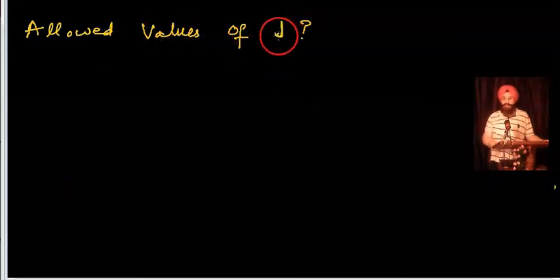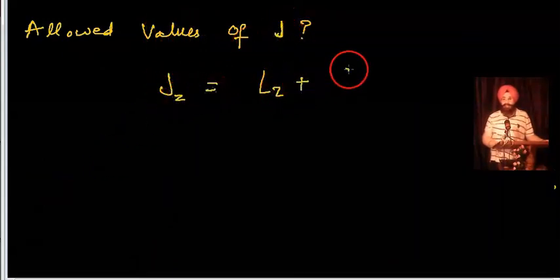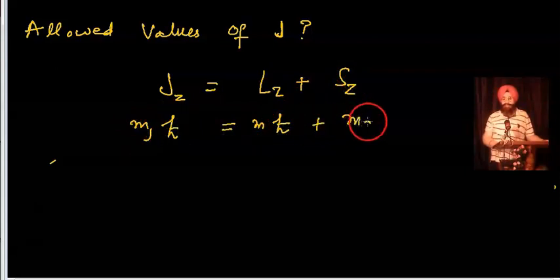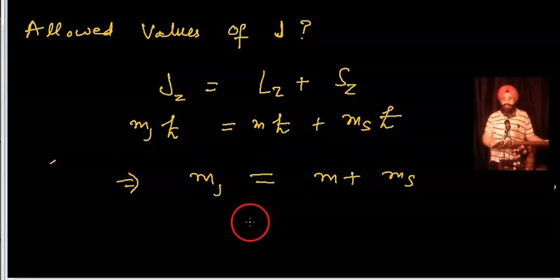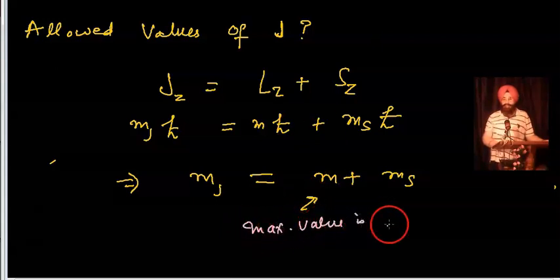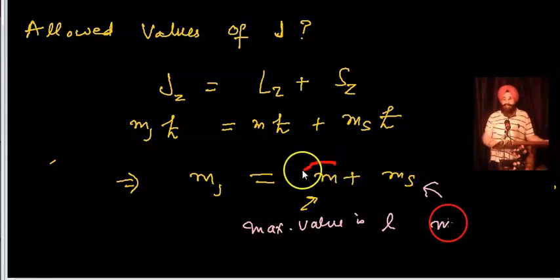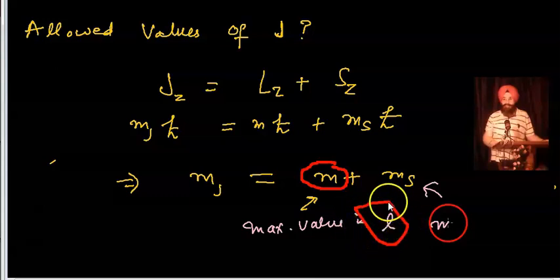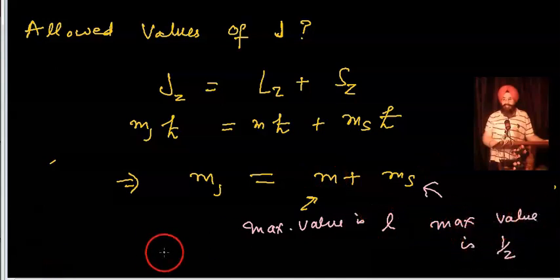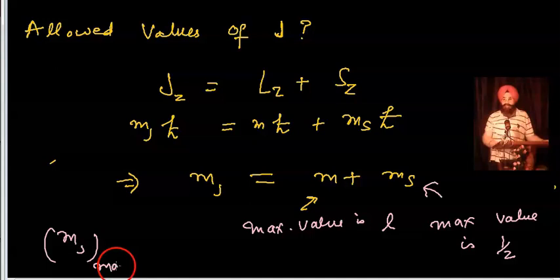Now, what are the allowed values of j? The z-component J_z equals L_z plus S_z. Substituting values in terms of magnetic quantum numbers, ℏ cancels out. The magnetic quantum number m varies from −l to +l, so the maximum value is +l, and the maximum spin value is +1/2. Therefore, the maximum value of m_j is l plus 1/2.